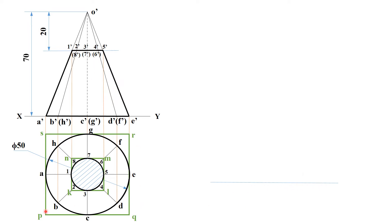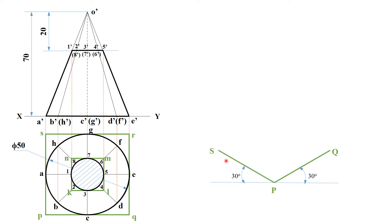Since this is a frustum, you can pick either P or Q as the starting reference point. Taking P as the reference, draw PQ and PS with an inclination of 30 degrees to the horizontal reference line. This gives you PQ on one side and PS on the other. Complete the box — this marks the base of your isometric view.